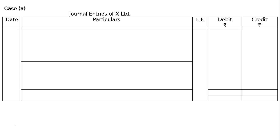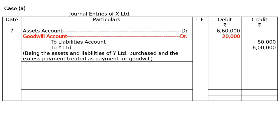Case A: Journal entries of X Ltd. with proper format — same as the last question. Assets account debited Rs. 6,60,000; to liabilities account Rs. 80,000; to Y Ltd. (vendors account) Rs. 6,00,000. The difference is Rs. 6,60,000 minus Rs. 80,000, and we are paying Rs. 6,00,000 — this difference is called Goodwill. Goodwill account debited Rs. 20,000 — that is the balancing figure. Being the assets and liabilities of Y Ltd. purchased and the excess payment treated as payment for Goodwill.